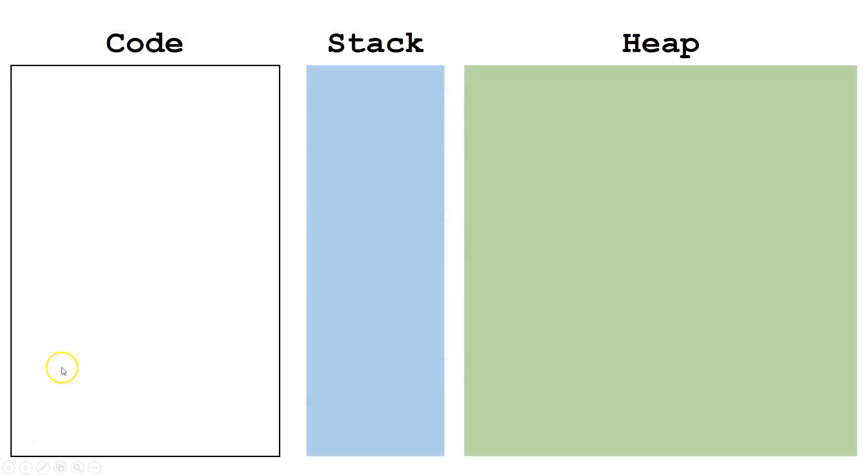Let's write some code. First, we're declaring a variable x of type intArray. Next, we are doing two things. We are creating a new intArray on the heap, and we are putting a reference to that object in the variable x.